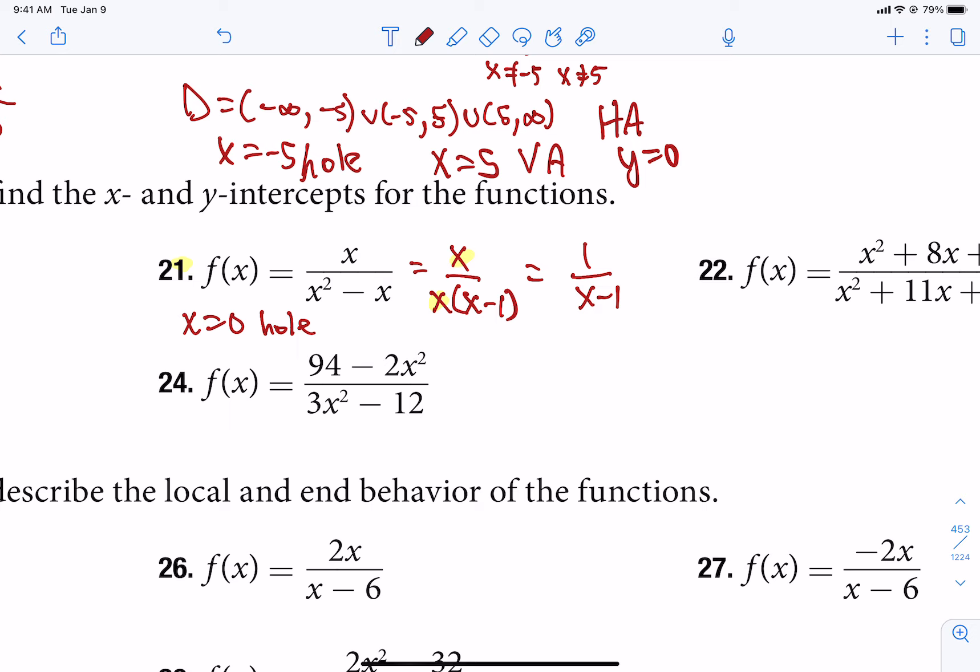Where are our x-intercepts? Well, our x-intercepts are where the top equals 0. So the top, now we're just going to use the reduced version. The top equals 0. 1 will never equal 0. So there are none. There is not an x-intercept for this graph. It never hits the x-axis.